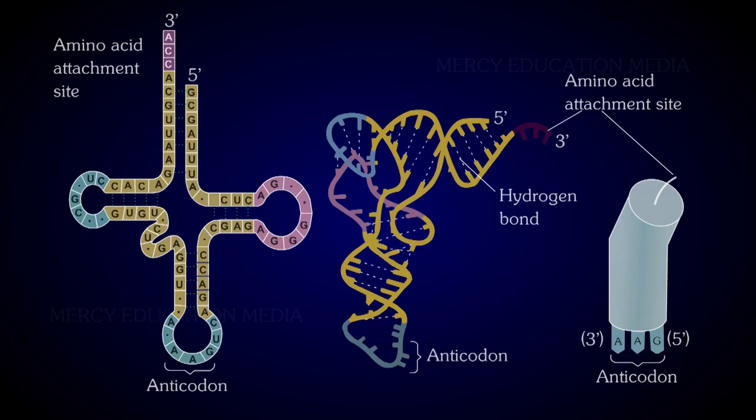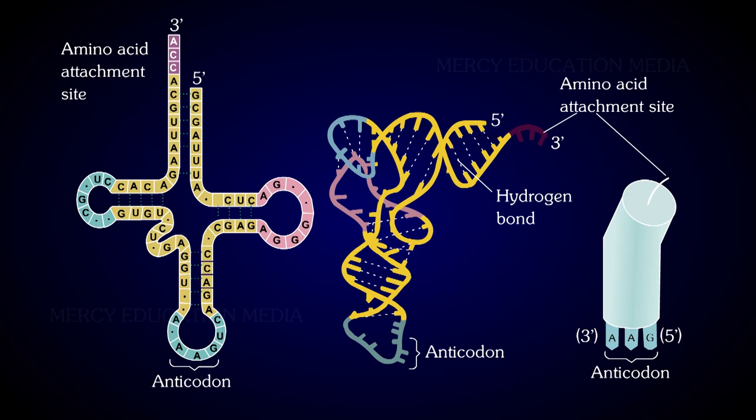The tRNA molecules are made up of 73 to 93 ribonucleotides. The acceptor arm carries an amino acid.